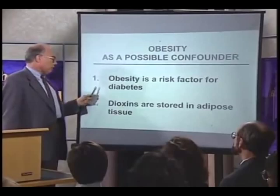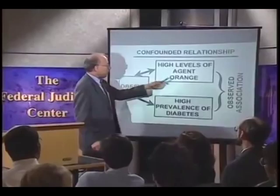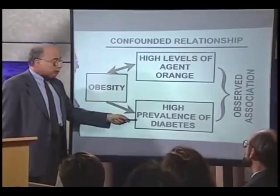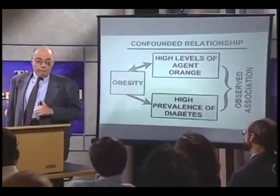We know that obesity is a risk factor for diabetes. We also know that dioxins — which Agent Orange is a mixture of — are stored in the fat tissue, the adipose tissue. Therefore, we would expect higher blood levels of dioxin in people who have more fat cells storing the dioxins. It is possible that we observe the association between high blood levels of Agent Orange and high prevalence of diabetes because both are associated with obesity. This has not yet been clarified, but it is evidence that the problem of confounding is a terribly important one that we have to take into account.